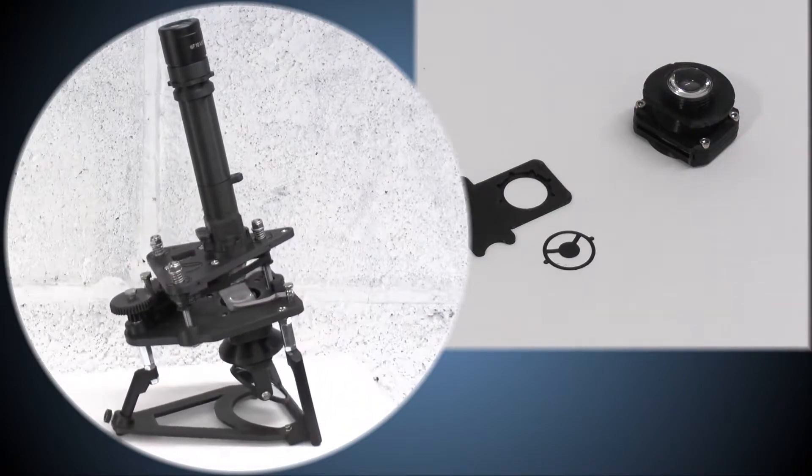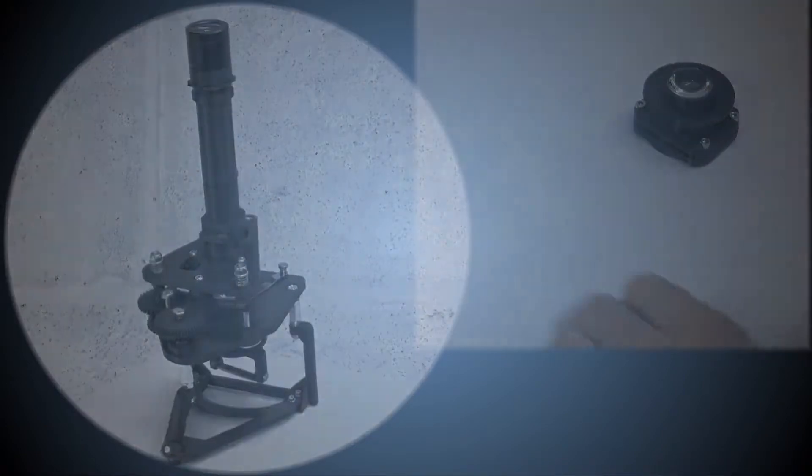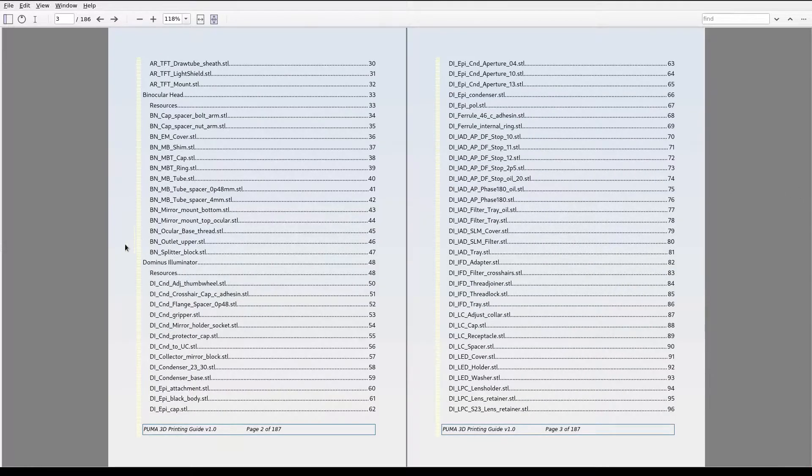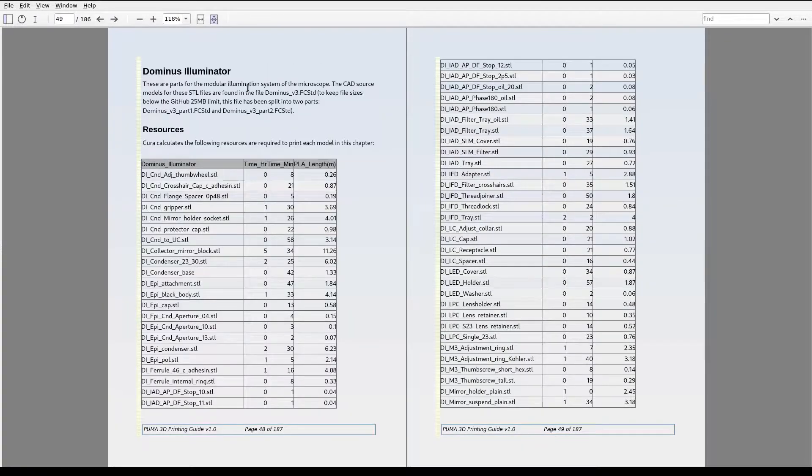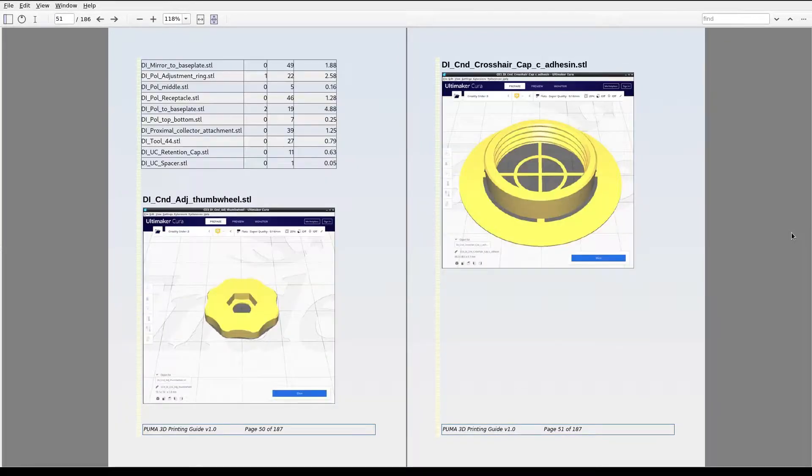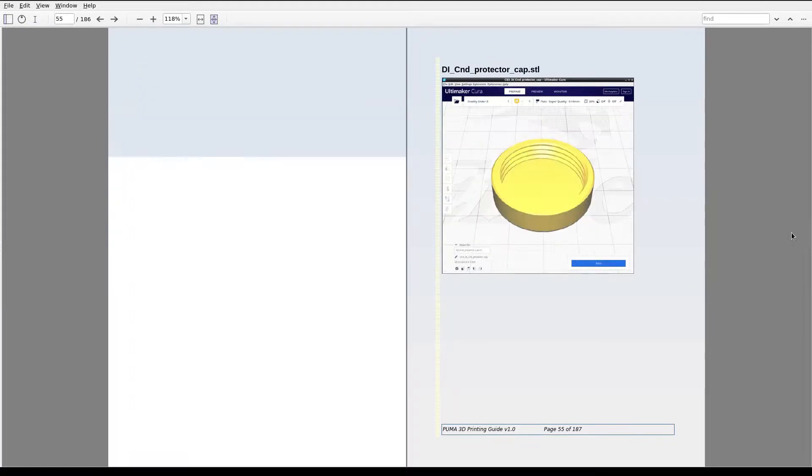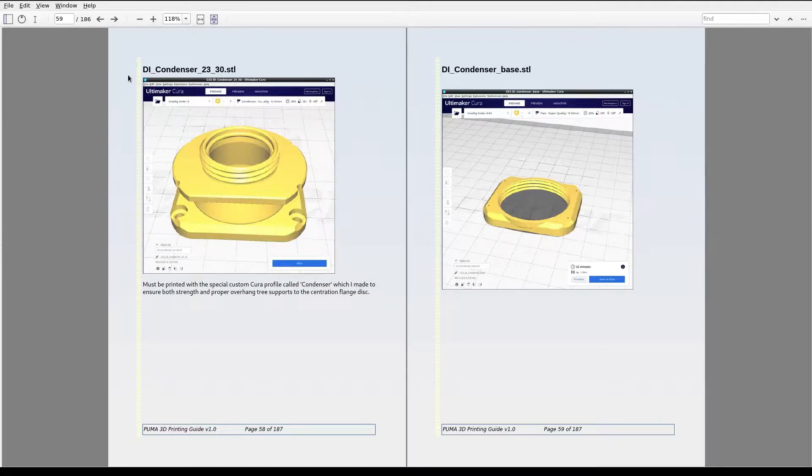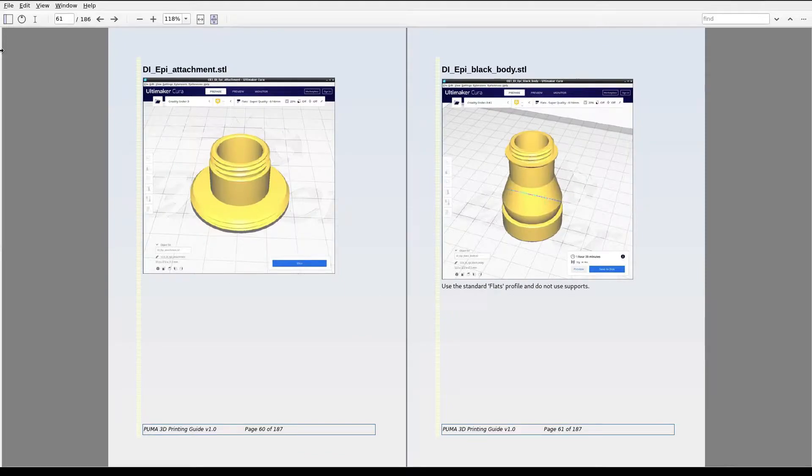This is the first in a series of videos that document the Puma illumination system. The illumination system comprises a large set of many options and was given its own development name, the Dominus illumination system. For that reason, you will see that all the Puma CAD models pertaining to illumination are prefixed with DI, which stands for Dominus Illuminator.